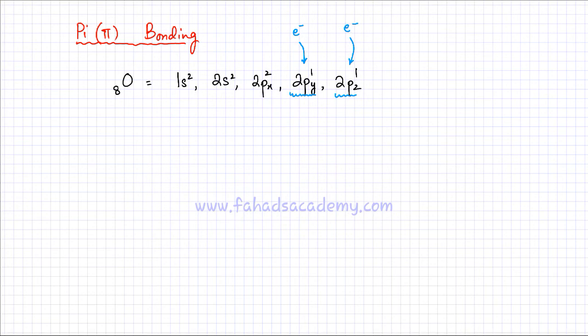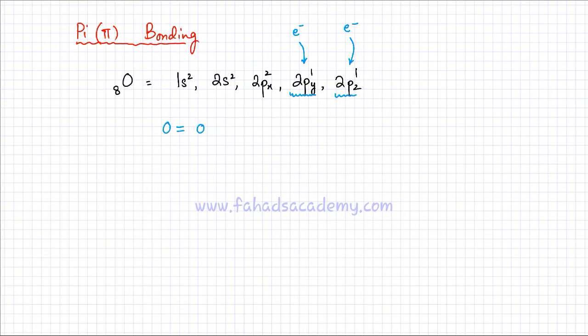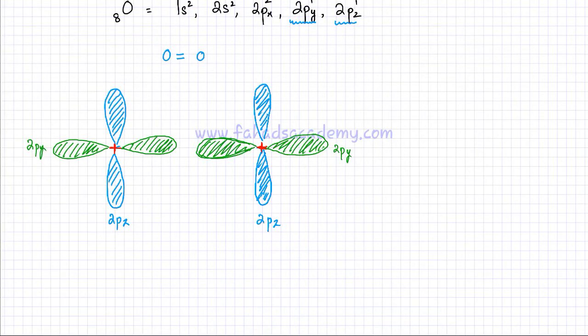If oxygen is going to try and form a covalent bond, it's going to try and attract an electron from two separate atoms, or it could be from the same atom as well. I'm going to describe pi bonding by giving you an example of an oxygen molecule, in which an oxygen atom is bonded to another oxygen atom and they both complete their outermost shells. I've drawn two oxygen atoms and only shown the 2py and the 2pz orbitals because they're involved in bonding.